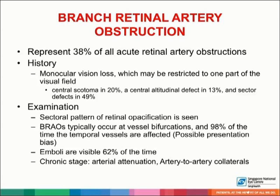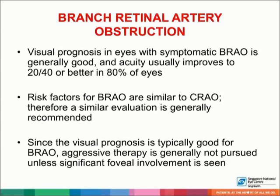Branch retinal artery obstruction, also known as BRAO, represents 38% of all acute retinal artery obstructions. Patients present with monocular vision loss, which may be restricted to one part of the visual field. On examination, a sectoral pattern of retinal opacification is seen, and BRAOs typically occur at vessel bifurcations — 98% of the time, the temporal vessels are affected. Emboli are visible 62% of the time. In the chronic stage, arterial attenuation and artery-to-artery collaterals may be seen. Visual prognosis is generally good, with acuity improving to 20/40 or better in 80% of eyes. The risk factors are similar to CRAO; since visual prognosis is typically good, aggressive therapy is generally not pursued unless significant foveal involvement is seen.